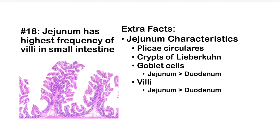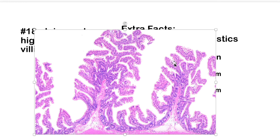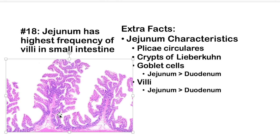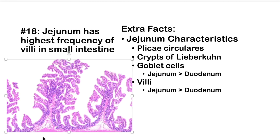Fact 18: The jejunum has the highest frequency of villi in the small intestine. The jejunum has distinctive plicae circulares — almost tree-like, circularly arranged transverse folds most prominent here. There are more goblet cells and more villi in the jejunum than in the duodenum. The plicae circulares extend the submucosa into their cores and are more prominent here than anywhere else in the small intestine.